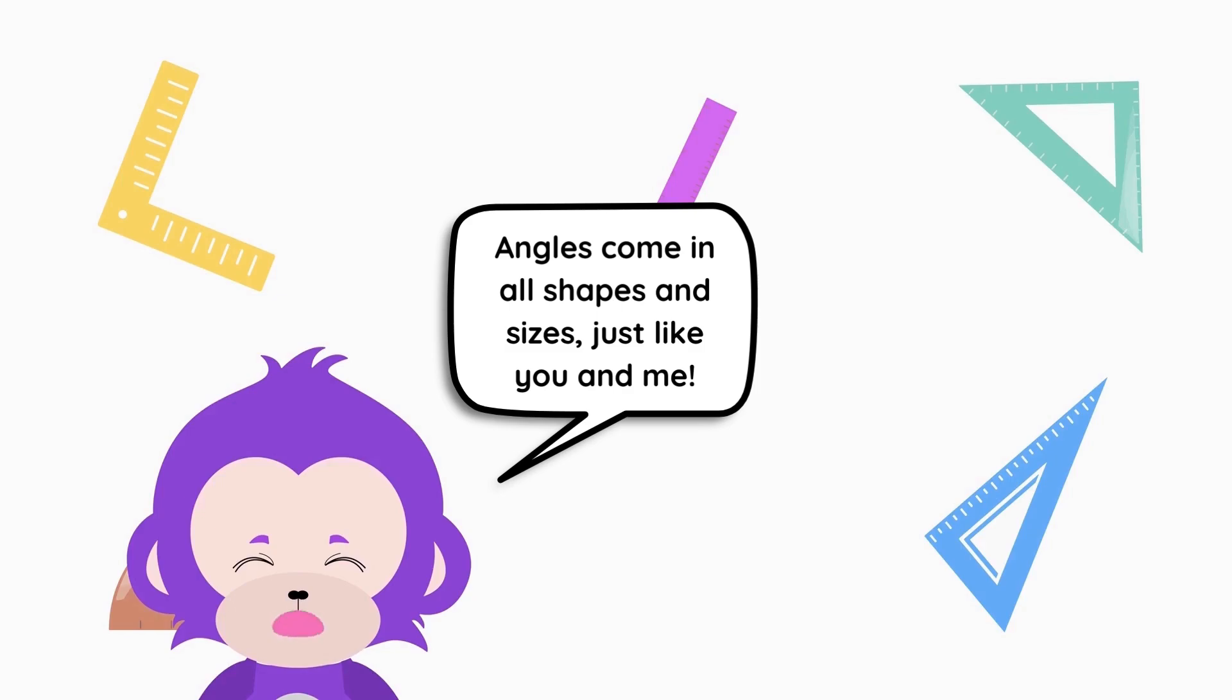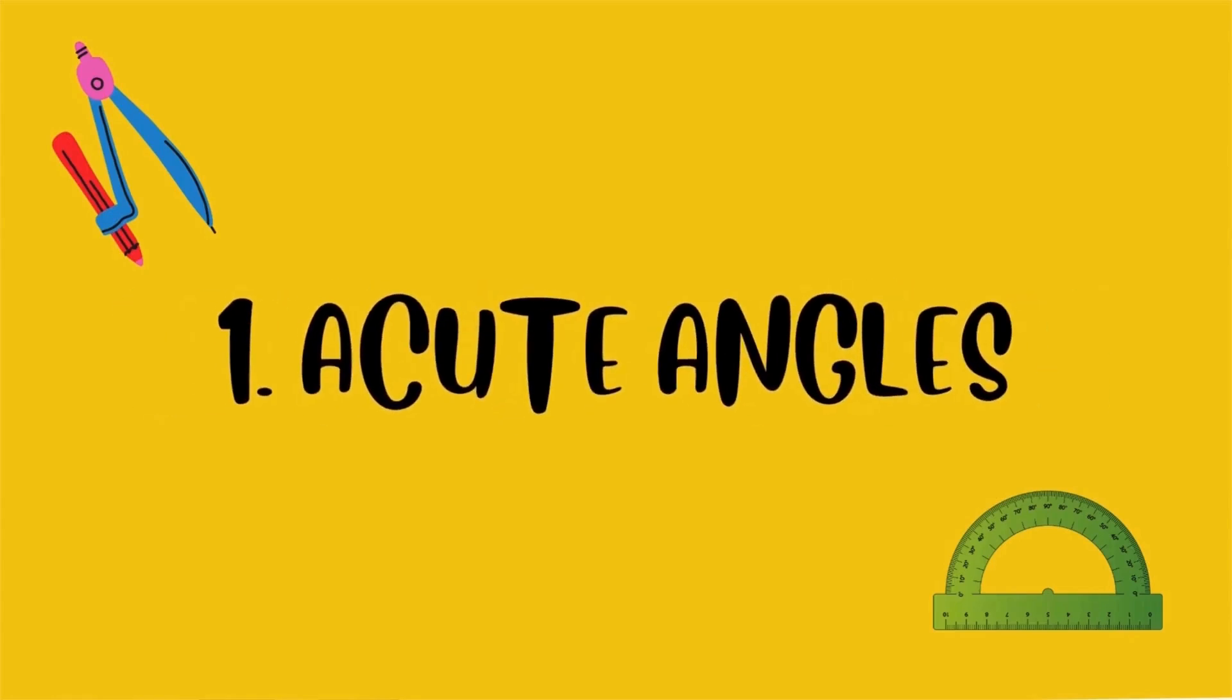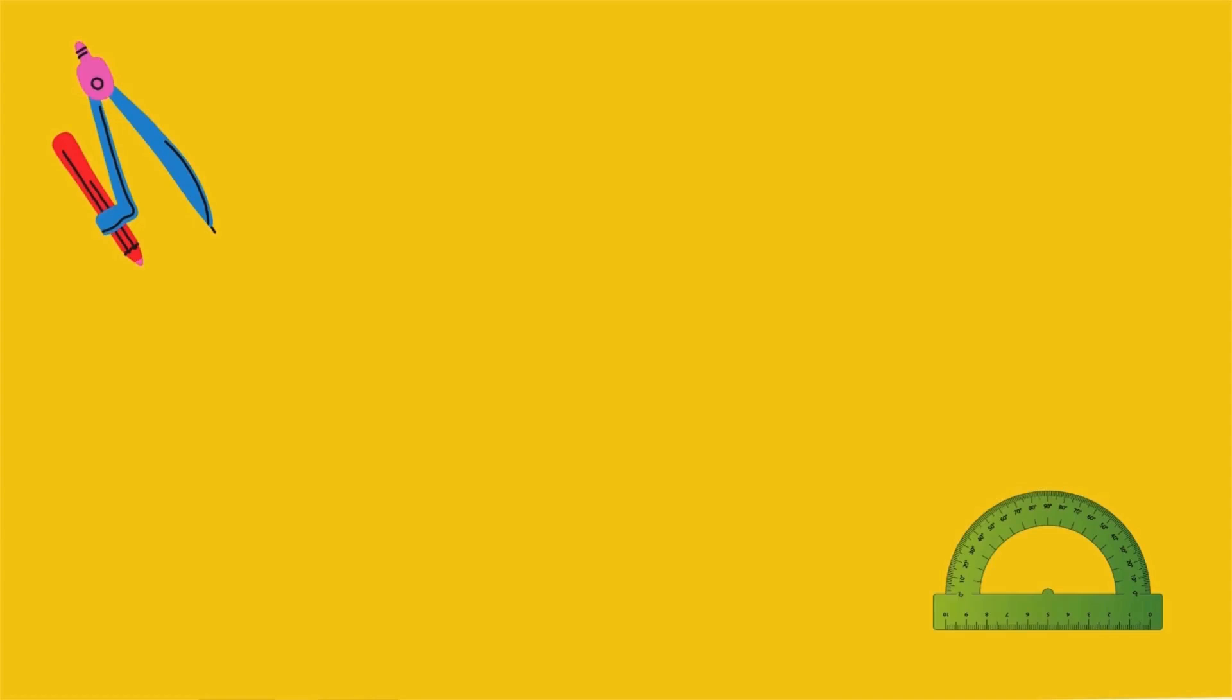But we can group them into three main types. One: acute angles. These little guys are shy, opening less than 90 degrees. Think of a slice of pizza, that's an acute angle.